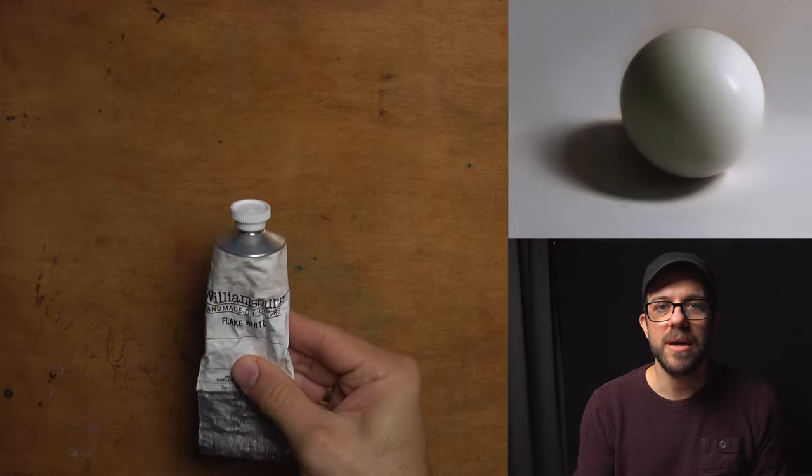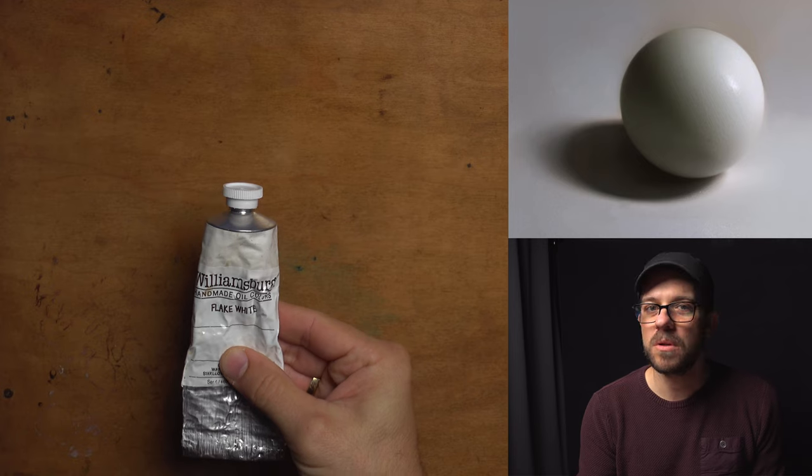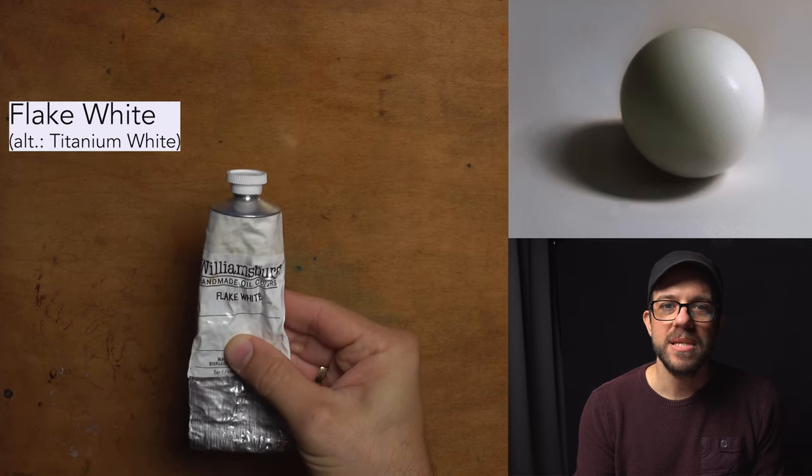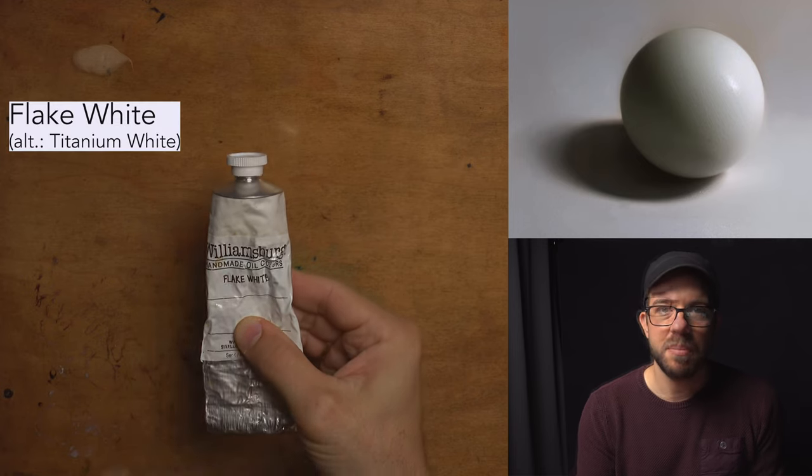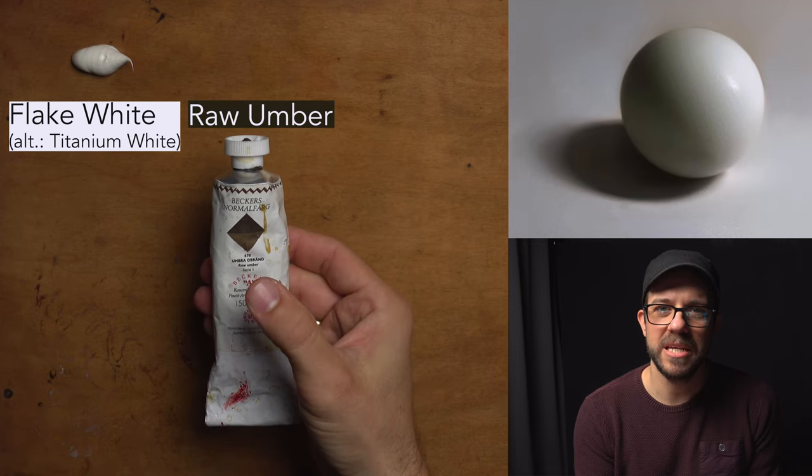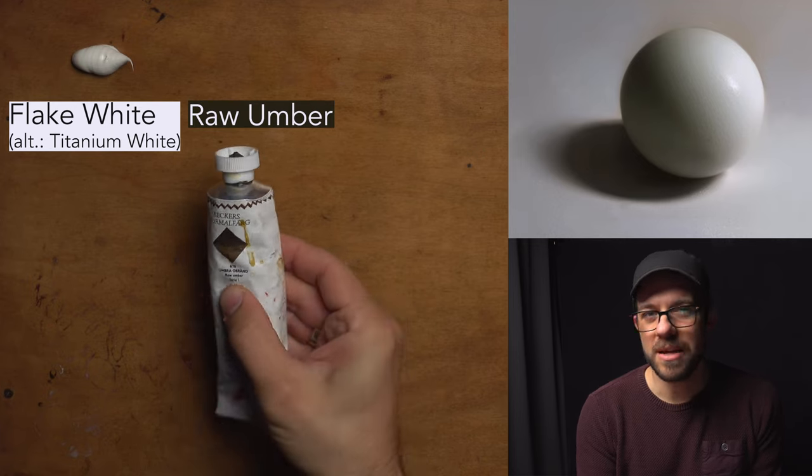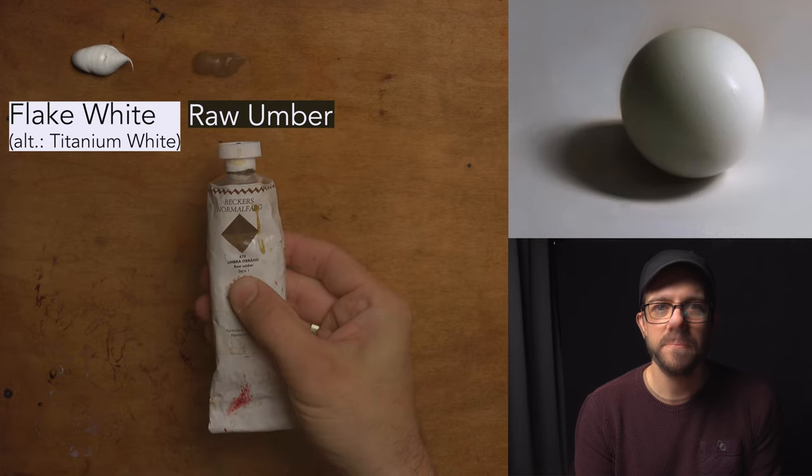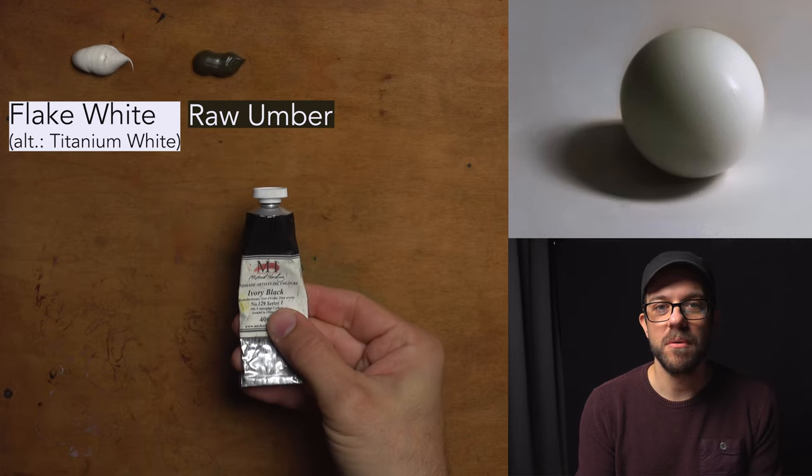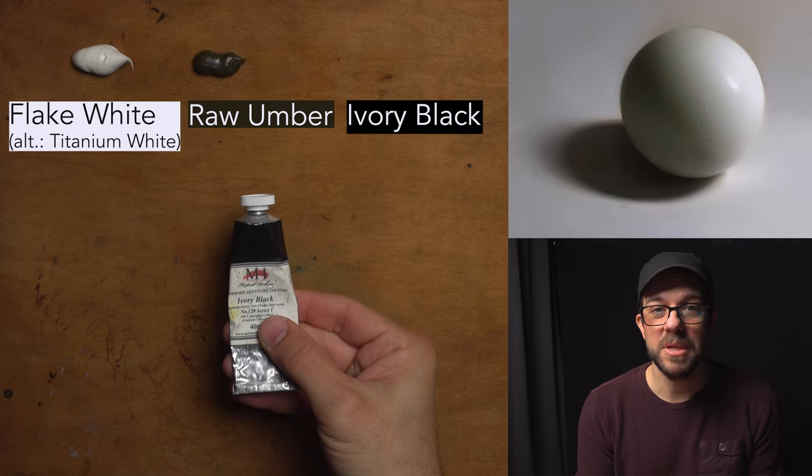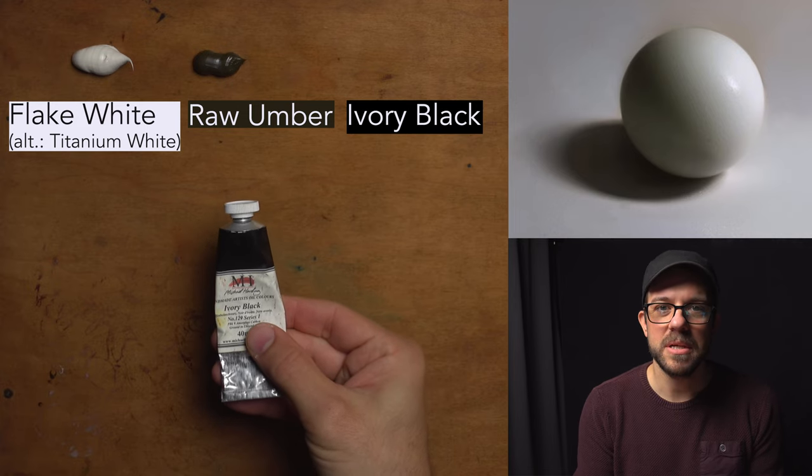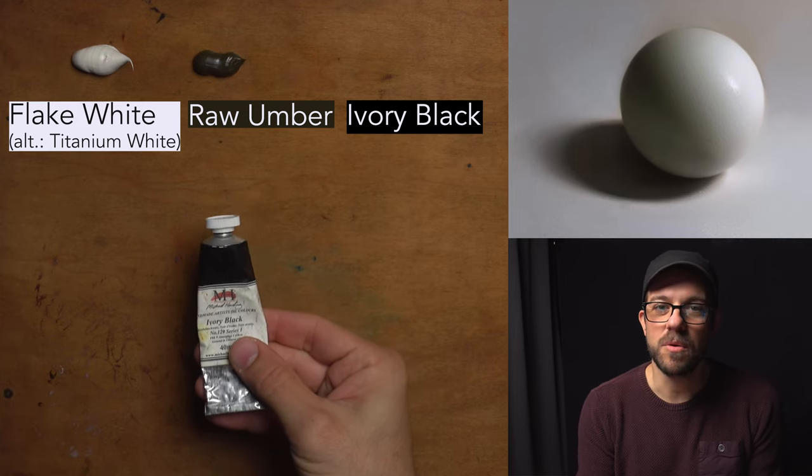Starting out with white, I've got a Williamsburg handmade oil color, flake white. This is what I use for 90% of my paintings. After that we have raw umber, something that is neutral-ish and kind of a warm brown type of color. Finally, I've got ivory black from Michael Harding. This is not because I believe it's the best ivory black on the market, but simply because most ivory blacks are pretty similar.